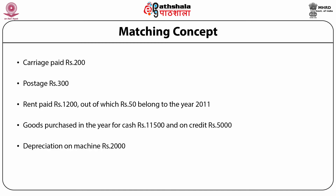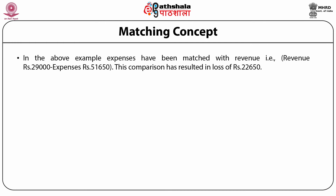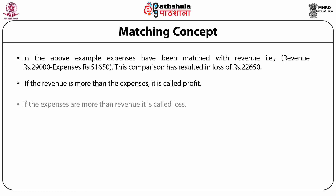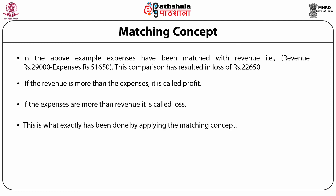Revenue side: sales — cash rupees 12,000 and credit rupees 11,000, total sales rupees 23,000; interest received rupees 5,000; rent received rupees 1,140 less rupees 140 for 2012, total rent received rupees 1,000; total revenue rupees 29,000. In this example, expenses have been matched with revenue. Revenue rupees 29,000, expenses rupees 51,650 — this comparison results in a loss of rupees 22,650. If revenue is more than expenses, it is profit; if expenses are more than revenue, it is a loss. This is what is done by applying the matching concept.